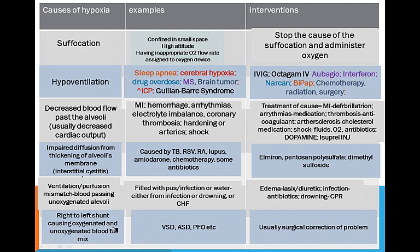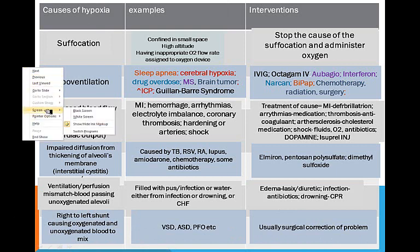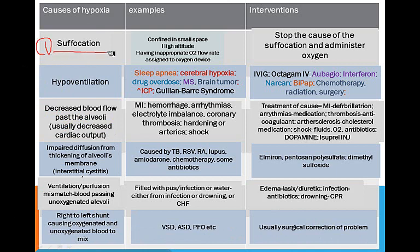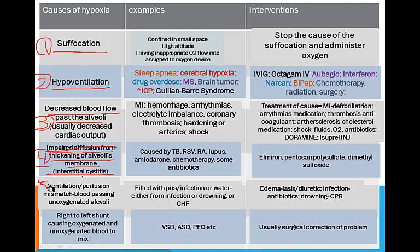The fix for a right-to-left shunt is usually surgical correction of the problem. So we have: number one — suffocation; two — hypoventilation; three — decreased blood flow past the alveoli; four — impaired diffusion from thickening of the alveolar membrane as in interstitial cystitis; five — ventilation-perfusion mismatch because something else is in the alveoli; and six — right-to-left shunt causing oxygenated and unoxygenated blood to mix.